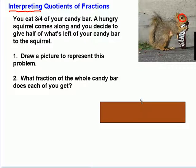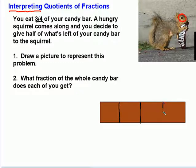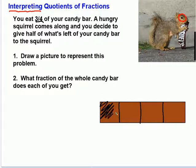We want to divide this candy bar up into fourths. So, we split it down the middle — that gives us half. Then we'll split each half in half, and that will give us a total of four-fourths. Now, we have eaten three-fourths of this candy bar, which means we have to subtract this much of it, and we've only got this much left.